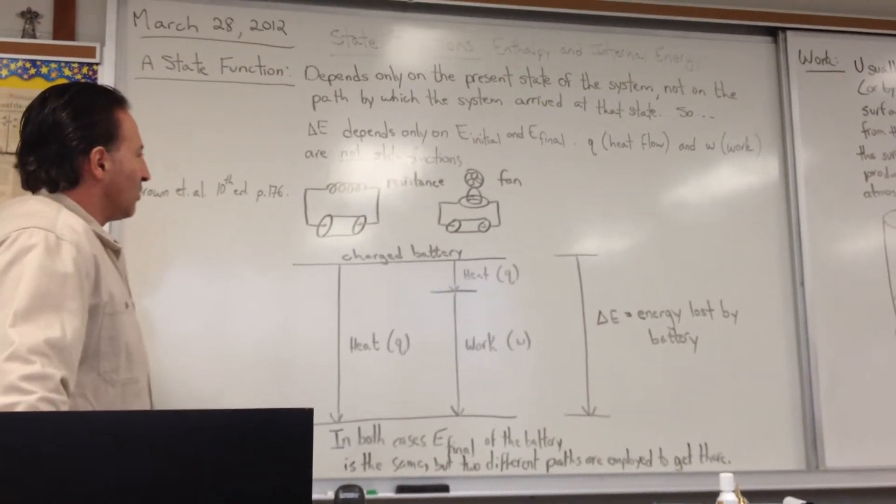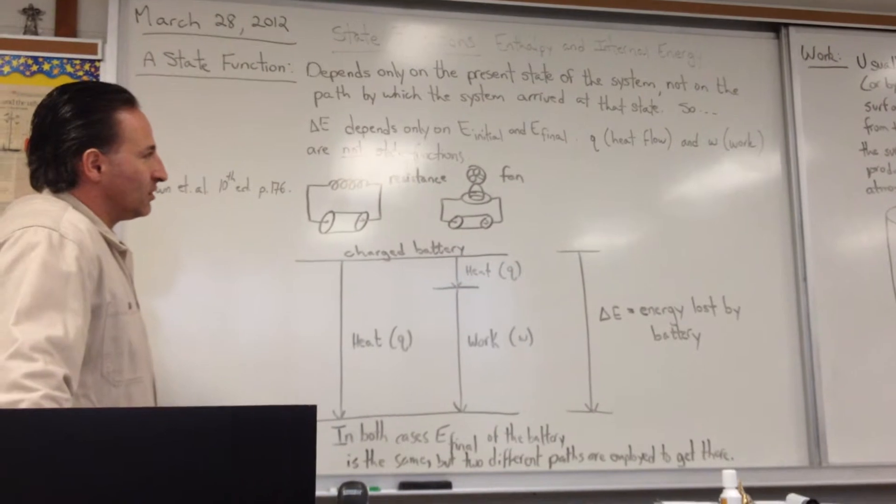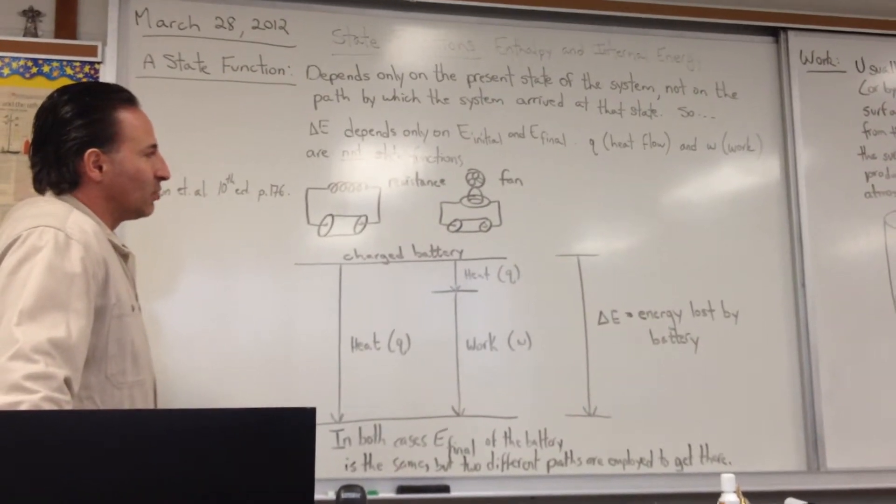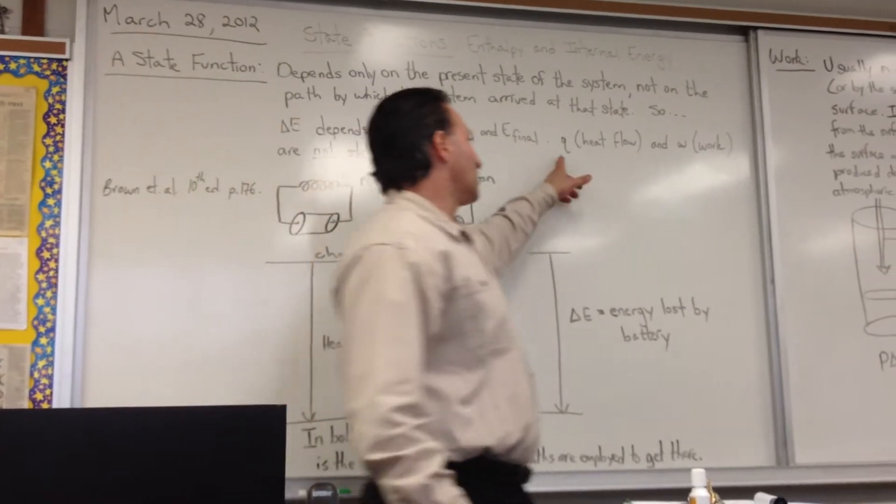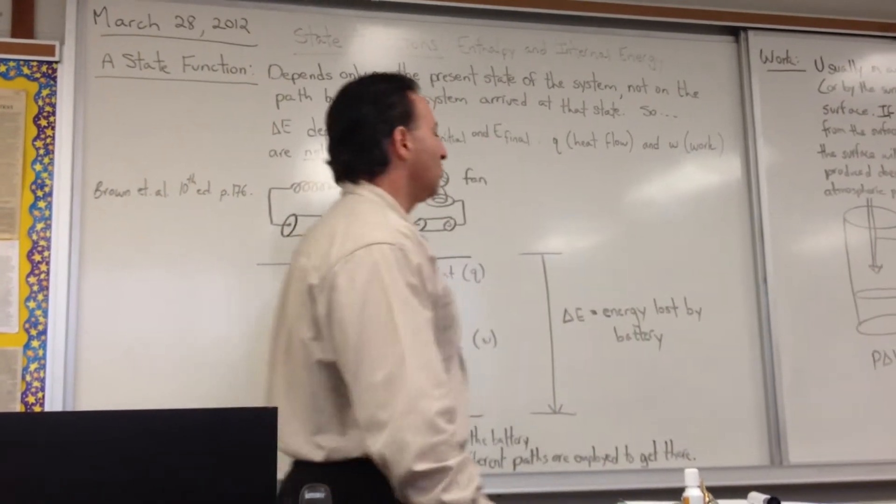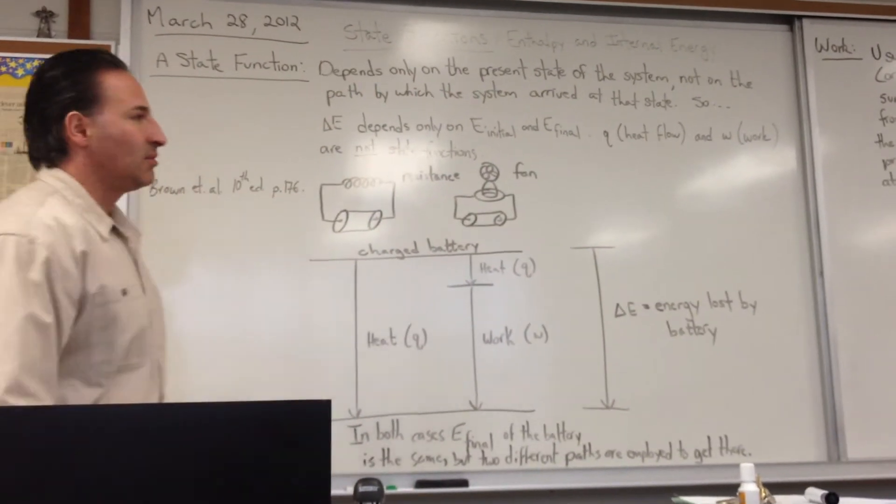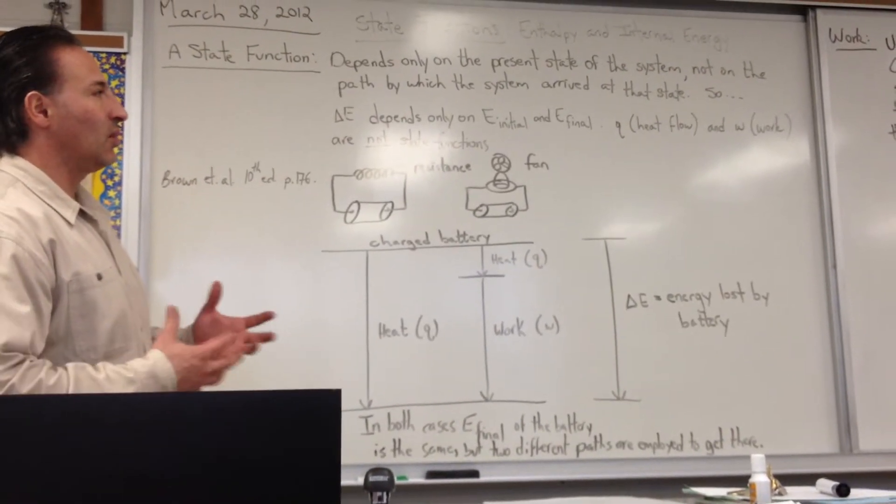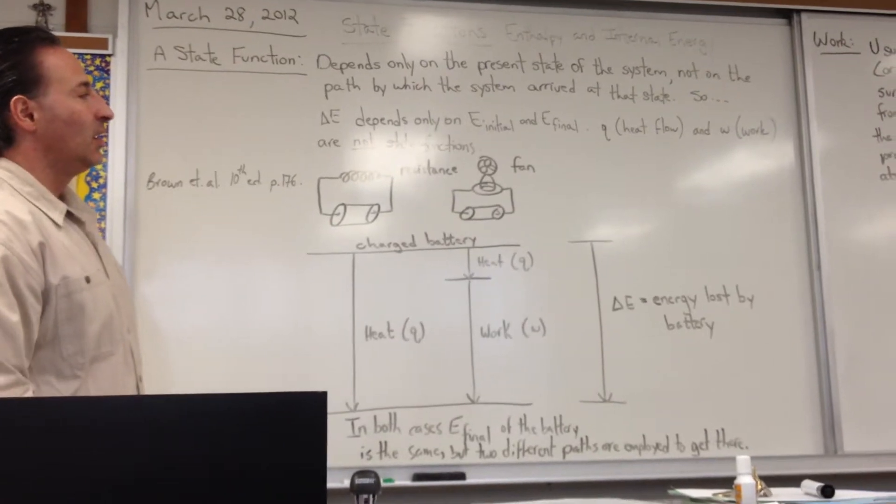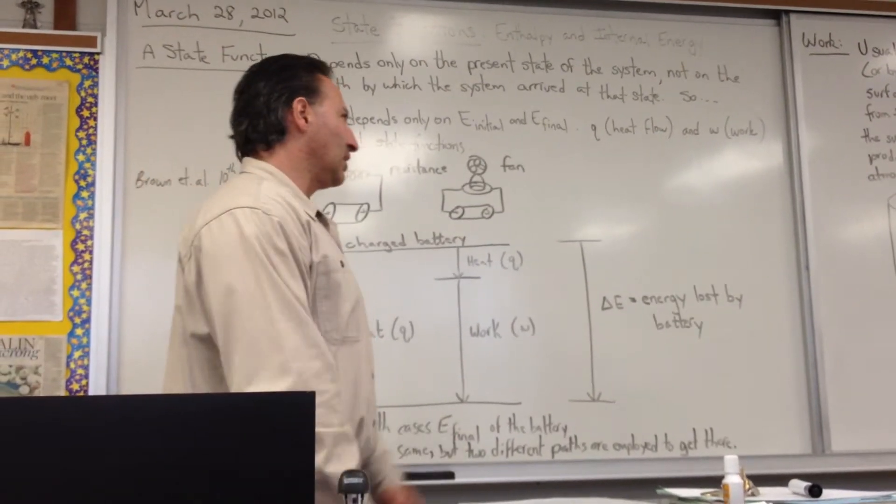So we recall that internal energy is a combination of heat flow and work done by the system. But those two variables are not state functions. So they can be any number of combinations. You can have a lot of heat with very little work. You can have almost all heat and no work. Or you can also have a lot of work with very little heat.